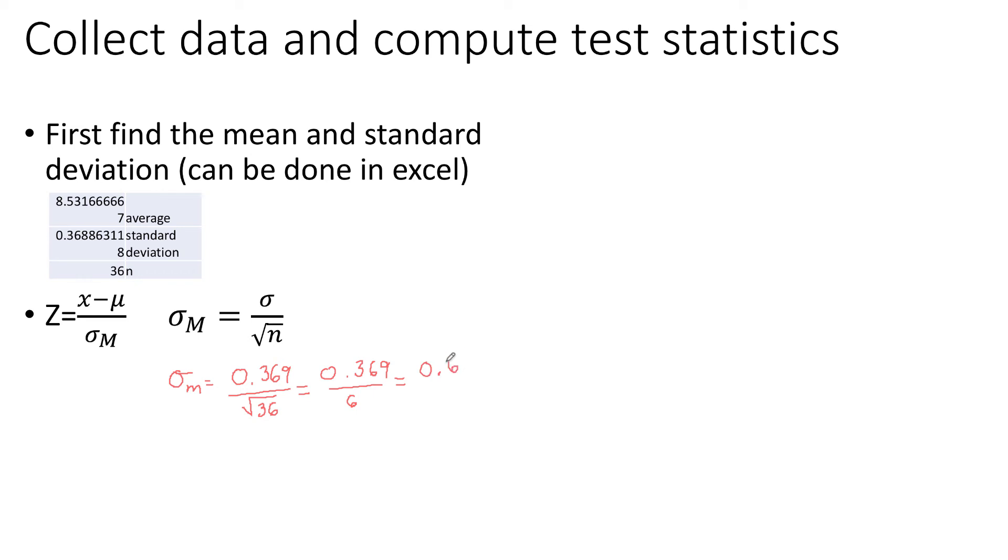Now I can calculate my test statistic, or z-value, and I do that by subtracting my sample mean from the claimed mean, or the mean that's in the hypothesis,